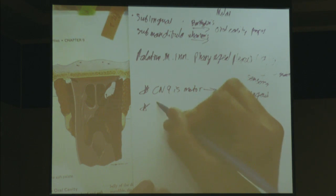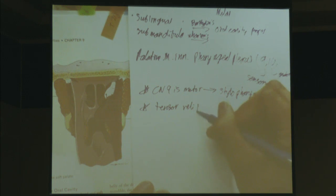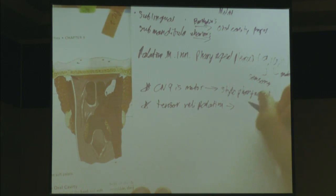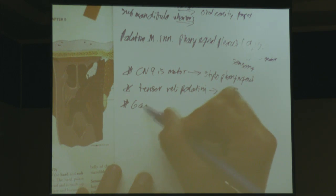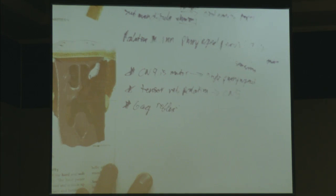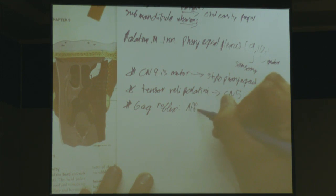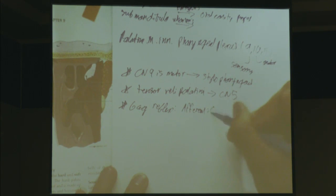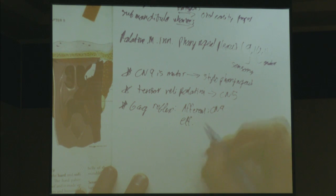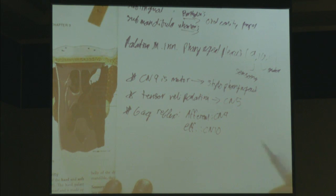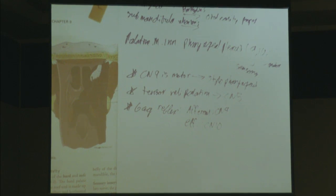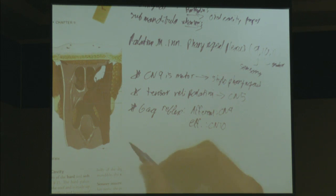Tensor veli palatini is a palatine muscle but doesn't follow this golden sentence — it's one of the exceptions, innervated by cranial nerve 5. Now talking about the gag reflex: whenever we have a reflex, we have an afferent and efferent branch. The afferent, being sensory, is cranial nerve 9, making our efferent — or motor — cranial nerve 10. This gag reflex is stimulated by touching the uvula or the uvulae muscle.